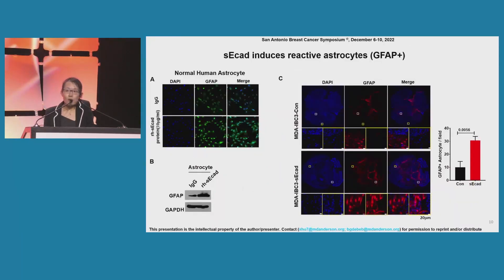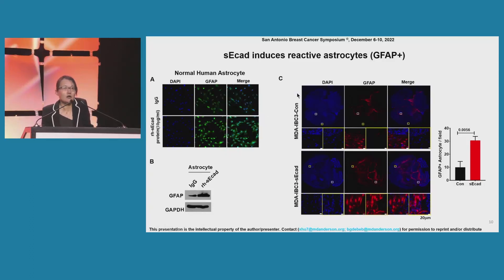Additionally, we wanted to know whether soluble e-cadherin affects the brain microenvironment. We first examined GFAP-positive astrocytes, which are the hallmark of reactive astrogliosis in brain metastasis. In our in vitro experiment, when we treated human astrocytes with soluble e-cadherin recombinant protein, we can see clearly that astrocyte reactivation was significantly higher than the control group. This data was also validated by western blot. Furthermore, we validated this data in our in vivo tissues; GFAP staining showed that GFAP-positive astrocytes were significantly higher in the soluble e-cadherin group than the control group.